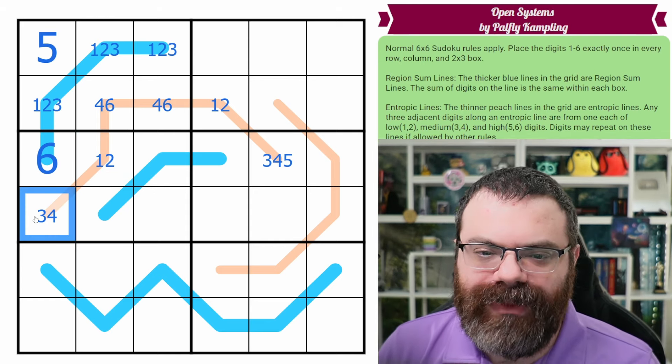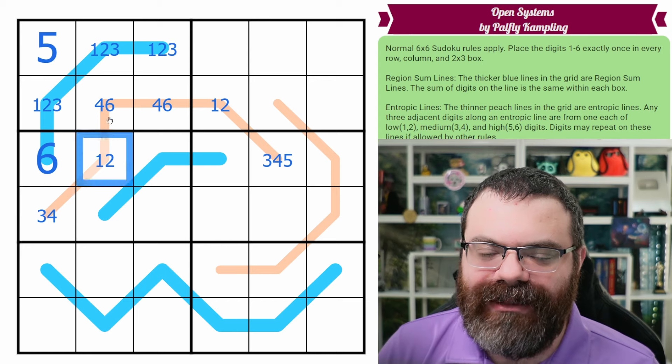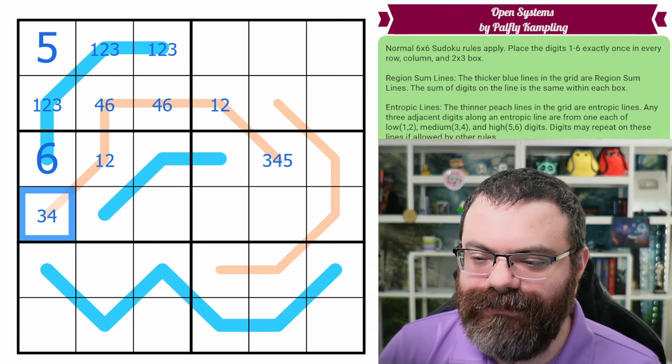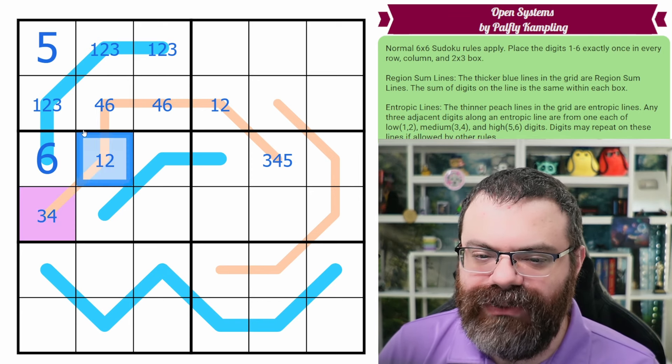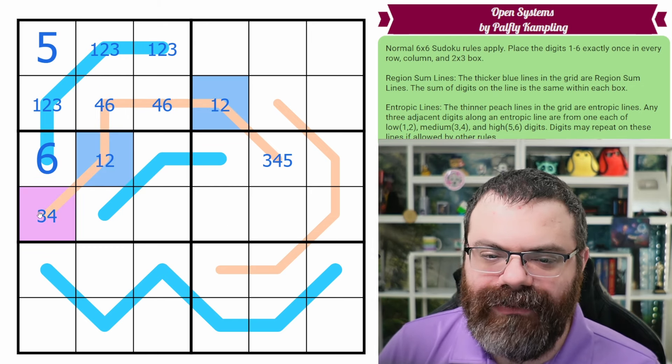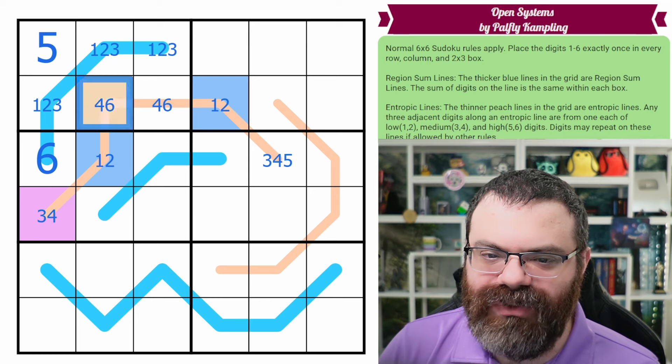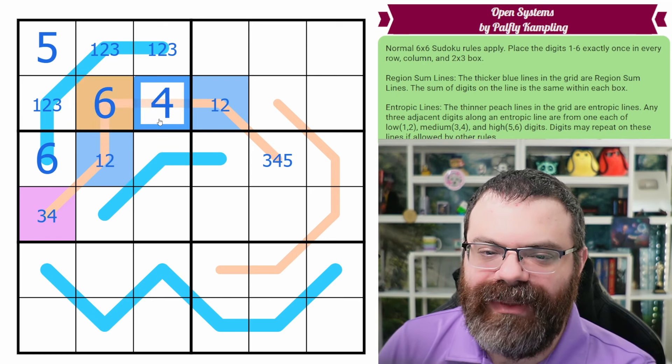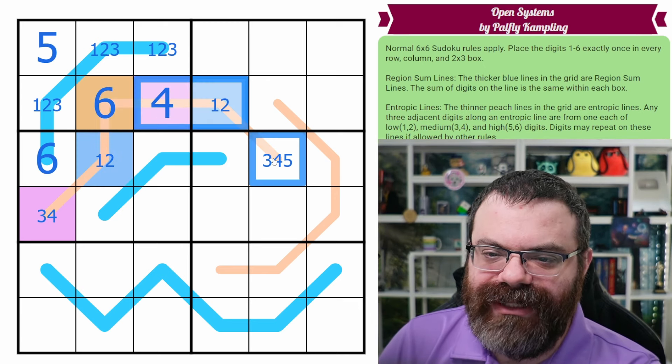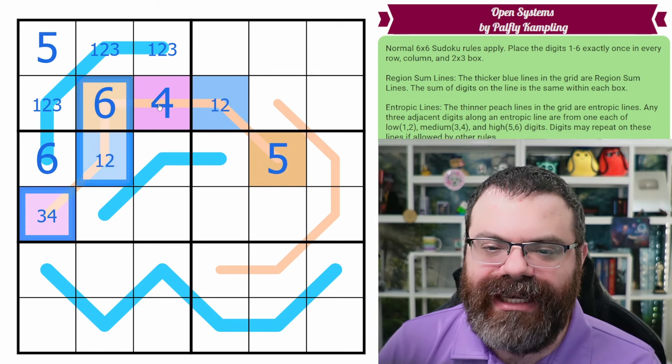The thing to understand about entropic lines is that they're always going to go in the same order. The order is defined by whichever three we find the order first. It's going to cycle is my point. So let's use purple for medium, let's use blue for low, and so this is also blue and then we'll use orange for high. Now these three digits are adjacent. We already have a purple and a blue, so the only color left we can have is orange. And that makes this have to be a high.